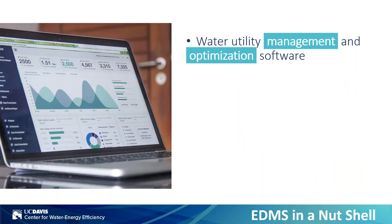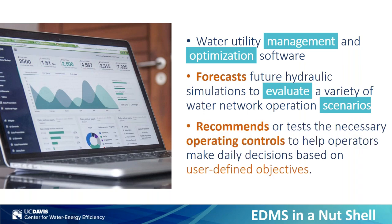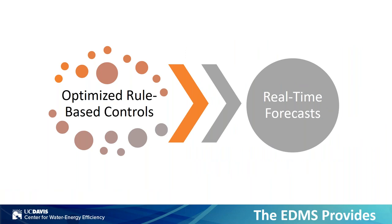So what is an EDMS? It is a water utility management and optimization software. It forecasts hydraulic simulations to evaluate a variety of water network operation scenarios, and it recommends or tests the necessary operating controls to help operators make daily decisions based on user-defined objectives. In essence, it provides optimized rule-based controls and real-time forecasts for the operator.